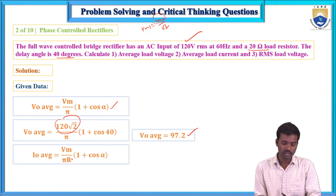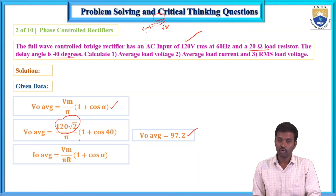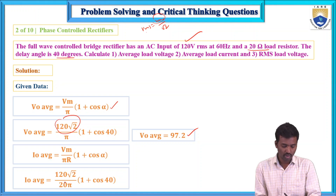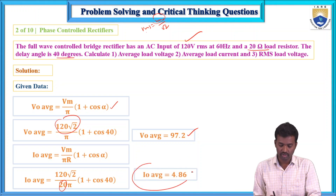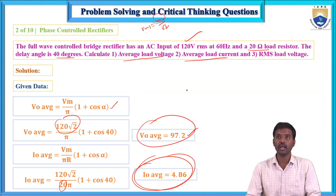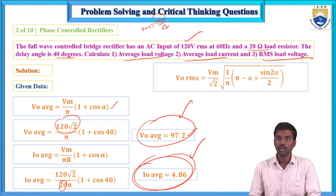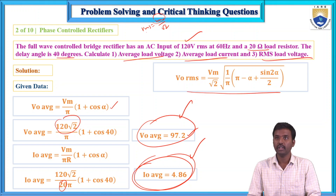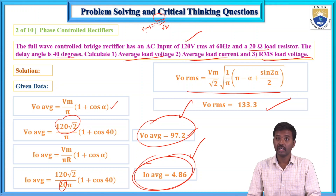The average load current equals the average voltage divided by resistance. Substituting R equals 20 ohms gives average current equals 4.44 amperes. For the RMS load voltage, the formula is: V_RMS = (Vm / √2) × √[(1/π)(π − α + sin2α / 2)]. Substituting α equals 40 degrees and Vm equals 120√2 gives V_RMS equals 133.3 volts.